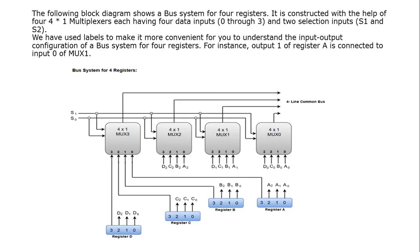If we give input S1=0 and S0=1, every multiplexer selects the 1 input. The corresponding data will be selected and transferred to the common bus. If it is 4 bits, it will be transferred to the common bus. Every register's data transferred depends on the multiplexer selection line.